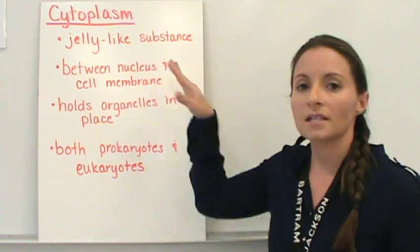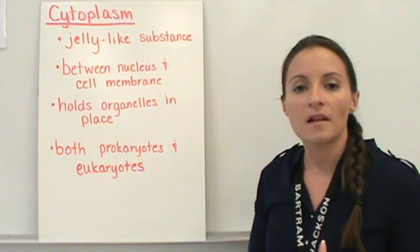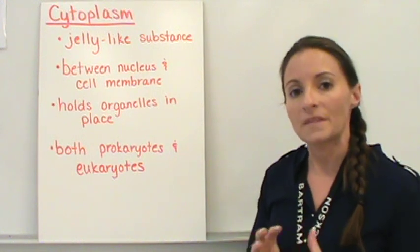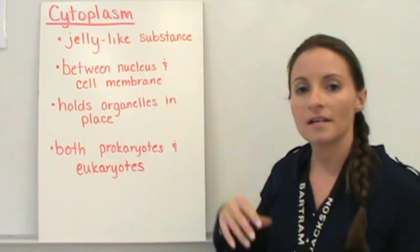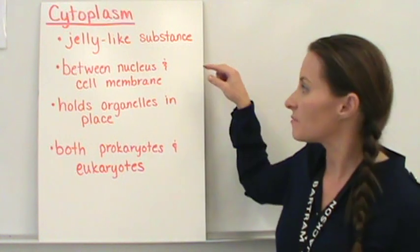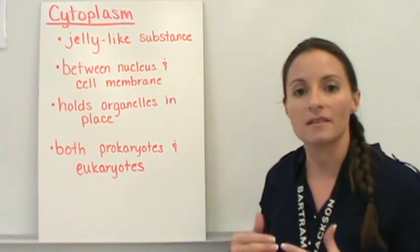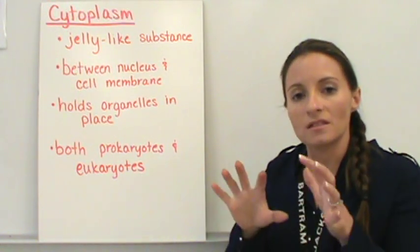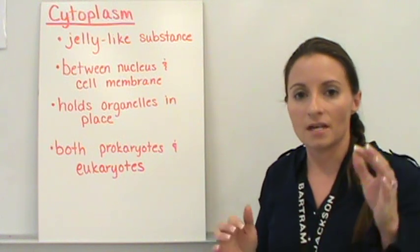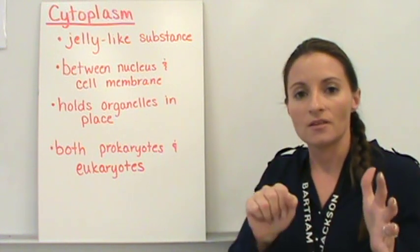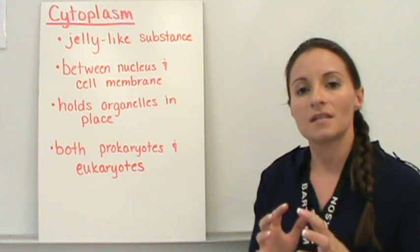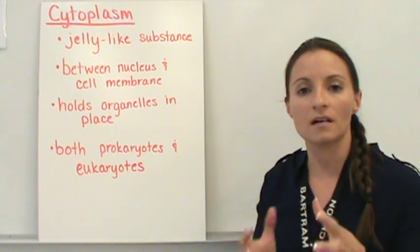Alright, let's take a look at the cytoplasm. Now the cytoplasm isn't actually considered an organelle. The cytoplasm is a jelly-like substance and it's located between the nucleus and the cell membrane. So it's this jelly-like substance that's between the cell membrane and the nucleus. And what it does is it takes and it holds all of the organelles into place.